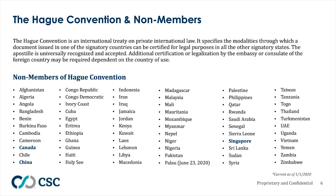The Hague Convention is an international treaty on private international law. Most of Western Europe and South America are party to the Hague Convention, while the vast majority of African and Middle Eastern countries are not. Some notable countries — China, Canada, and Singapore — are actually non-members of the Hague Convention and require additional authentication steps.